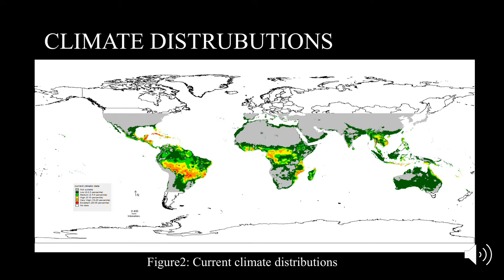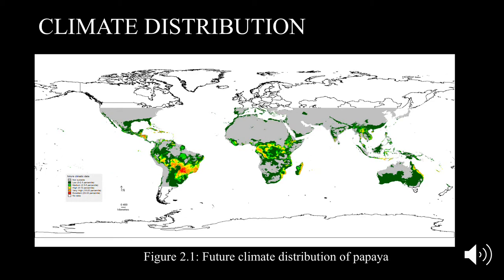This figure represents its current climate distribution specifically for papaya. By referring to the legend on the left of the map, we are able to see which areas have the most suitable climate. If we look closely, parts of North America, South America, Africa, and Asia — specifically the islands — have suitable climatic conditions.